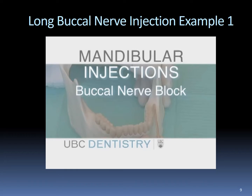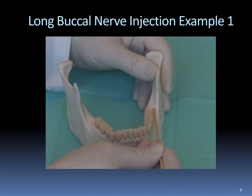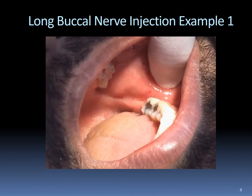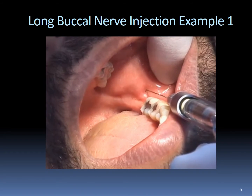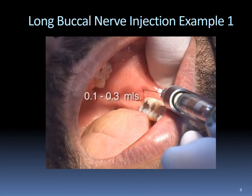The buccal nerve block is typically performed right after the inferior alveolar and lingual block injections without recapping the needle in between. The anterior border of the ramus is the bony landmark for the buccal nerve block. The injection site is the buccal mucosa immediately distal and lateral to the distal buccal cusp of the last mandibular molar. Insert the needle only a few millimeters until bony contact is made with the ascending ramus, withdraw one millimeter off the bone, aspirate, and deposit approximately 0.1 to 0.3 milliliters. A typical 1.8 milliliter cartridge should be enough for the inferior alveolar, lingual, and buccal injections.